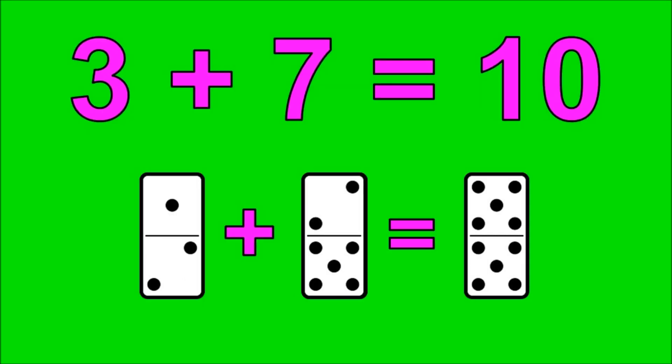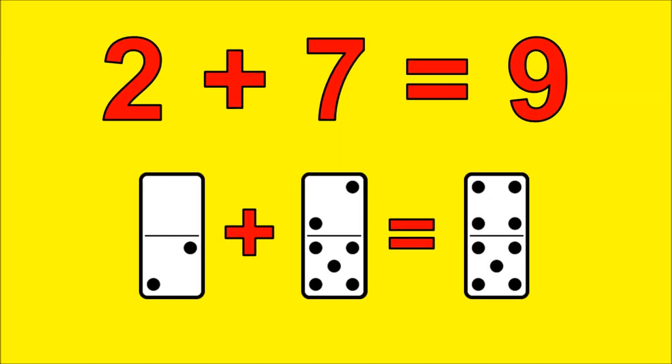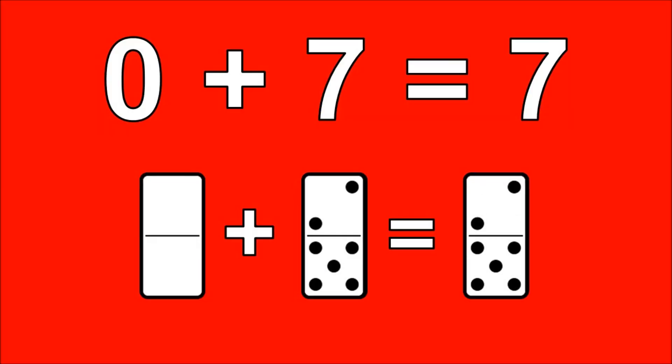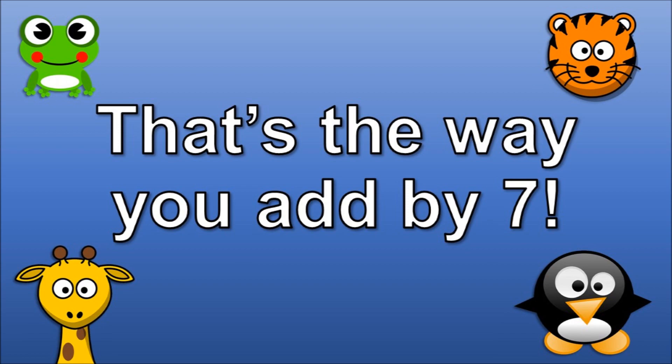3 plus 7 is 10, 2 plus 7 is 9, 1 plus 7 is 8, 0 plus 7 is 7. That's the way you learn by 7! Yeah!